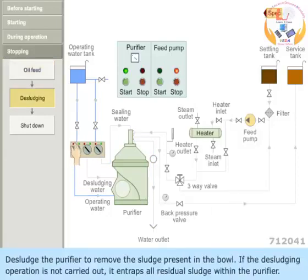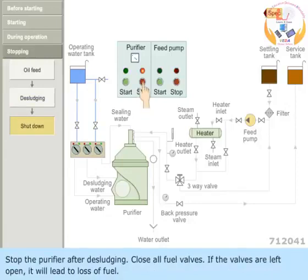Desludge the purifier to remove the sludge present in the bowl. If the desludging operation is not carried out, it entraps all residual sludge within the purifier. Stop the purifier after desludging.